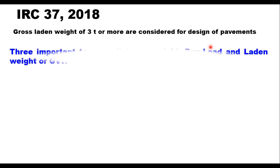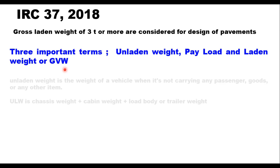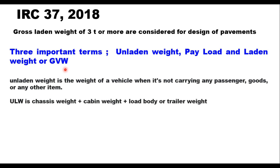Three terms are important here: unladen weight, payload, and laden weight or gross vehicle weight. Unladen weight is the weight of a vehicle when it is not carrying any passenger, goods, or any other item. This is the weight of the chassis, cabin, and load body or trailer.